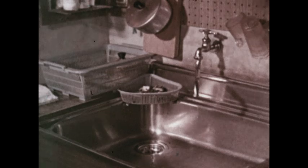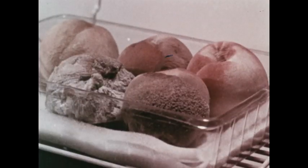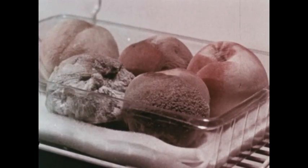Some molds may be found around a kitchen, where food scraps have been left. There are varieties which will quickly grow on overripe fruit. Others thrive best on bread, from which they take food used in growth.